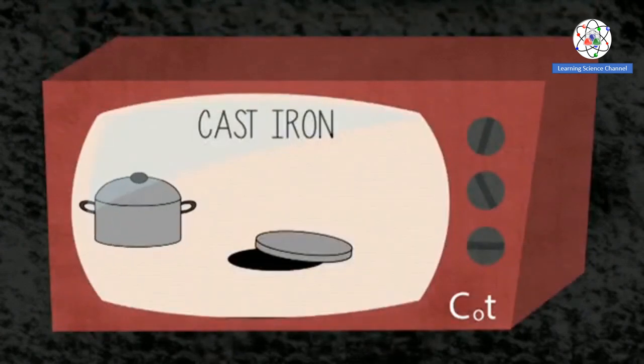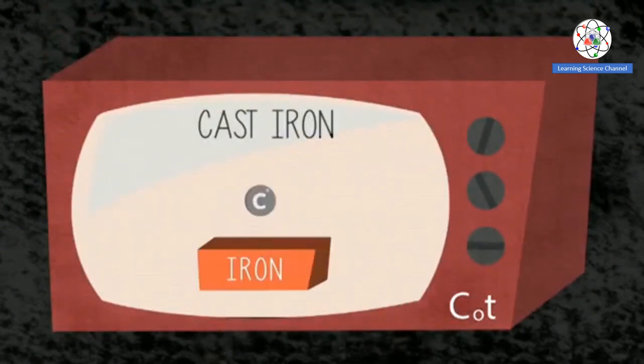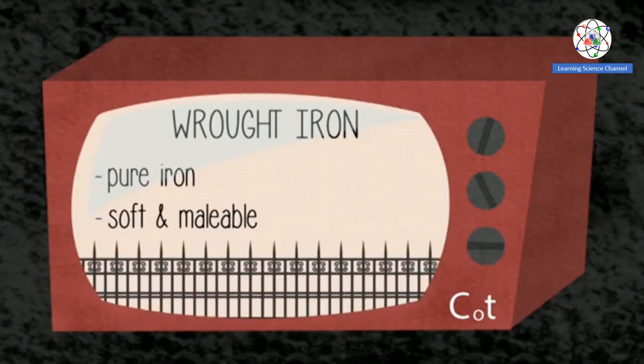We know that iron and its alloys are very important in everyday life. Iron is a great example of a metal where allotropism is present. Each allotrope has a different structure, which gives rise to different properties.